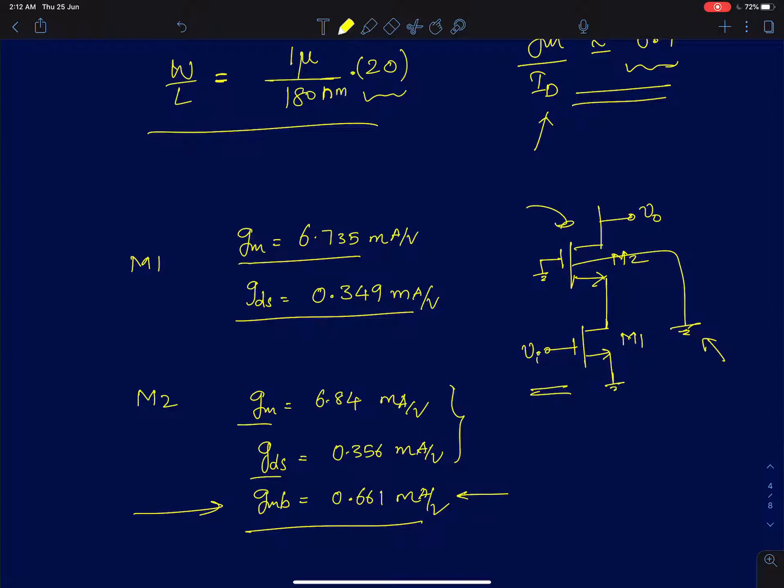Now because I haven't included gmb in the previous analysis, what you need to do is that you have to just add gmb to gm. The gmb occurs only in the second device. So wherever you get gm2 you just have to add gmb to it and all the expressions are changed. That's the only change you'll have to make.